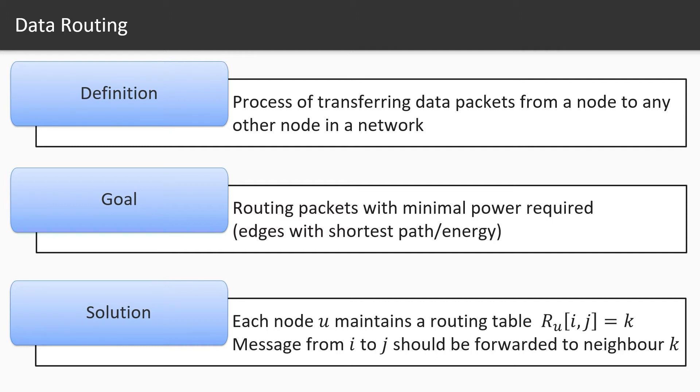To achieve this every node maintains a routing table which tells that the message m coming from node i and destined for node j should be forwarded to neighbor node k.